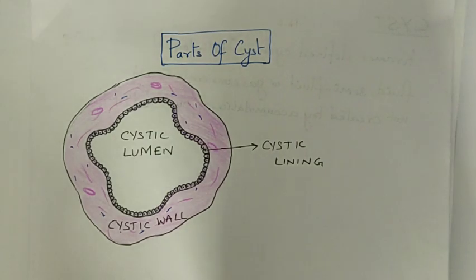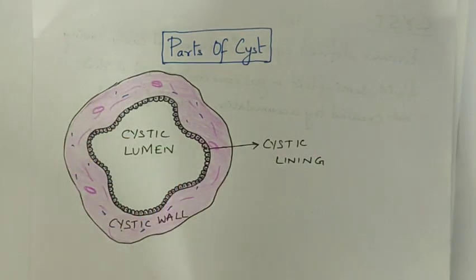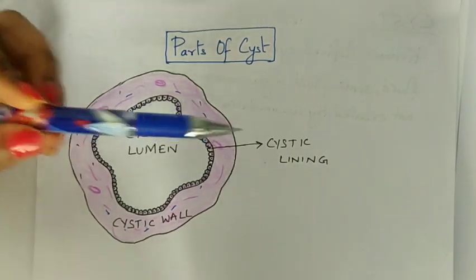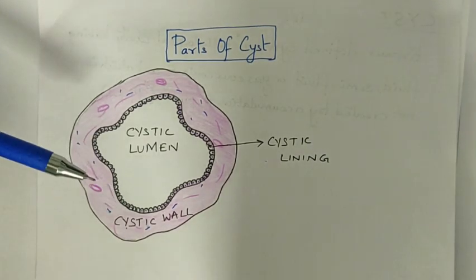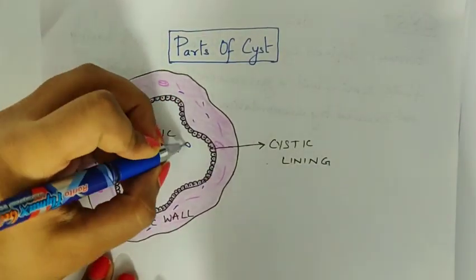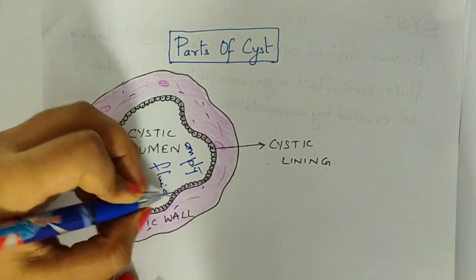The parts of a cyst are three: the cystic lumen, surrounded by a cystic lining, with the whole structure encircled by a fibrous cystic connective tissue wall providing integrity. The cystic lumen can be empty or contain fluid or semi-fluid material. The classification of odontogenic lesions — cyst or tumour — is a dynamic one that constantly changes, with new entities being added, some disregarded, and some reclassified.